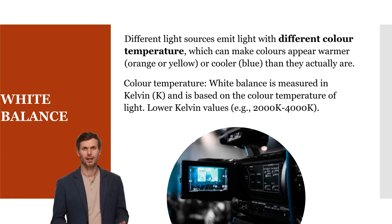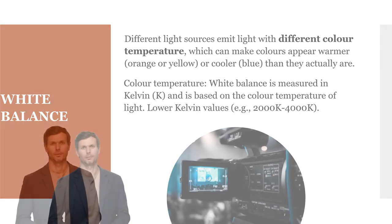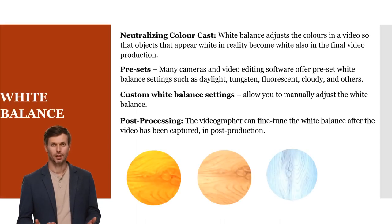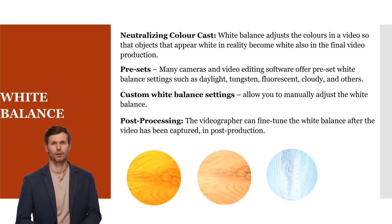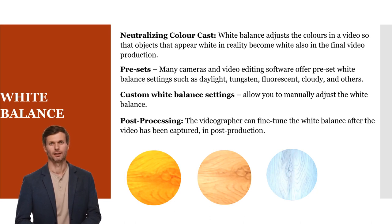White balance is measured in Kelvin and is based on the color temperature of light. Lower Kelvin values mean warmer, more yellow-orange light, while higher Kelvin values mean cooler, more blue light. White balance adjusts colors in a video so that objects that appear white in reality also appear white in the final production. Many cameras and video editing software offer preset white balance settings such as daylight, tungsten, fluorescent, and cloudy.